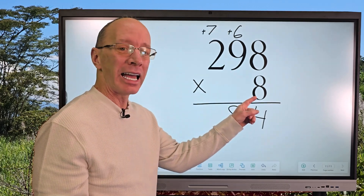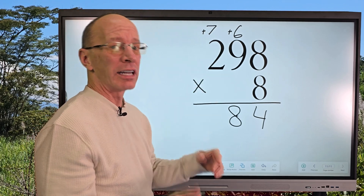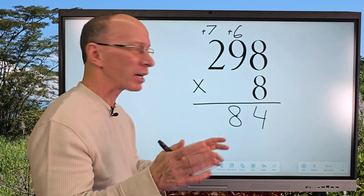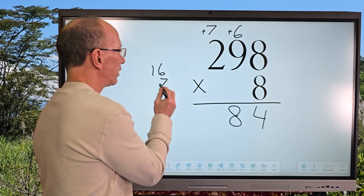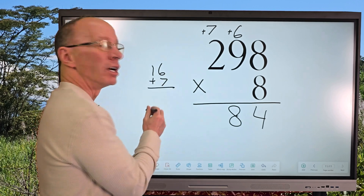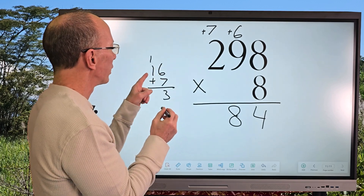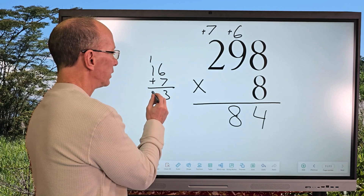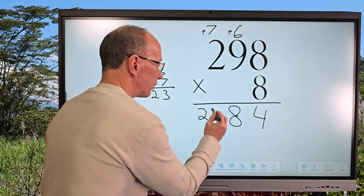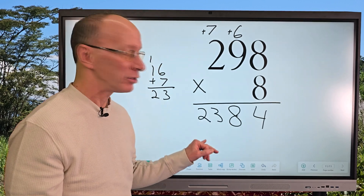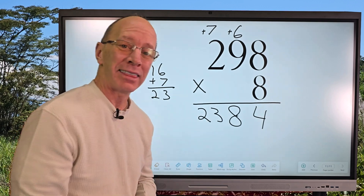Now eight times two is sixteen, and sixteen plus seven — sometimes the numbers get a little bigger, so it's okay to write sixteen here and the seven here and add those. Six plus seven would be thirteen, carry the one, and one plus one would be two, so that's twenty-three. I put twenty-three right here and our answer is two thousand three hundred eighty-four. Wasn't that fun?